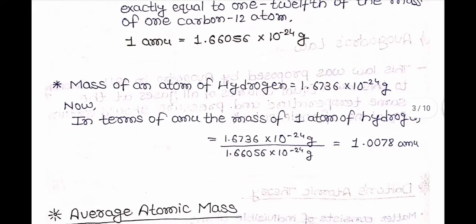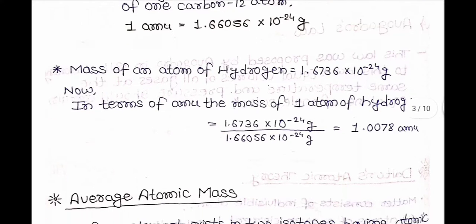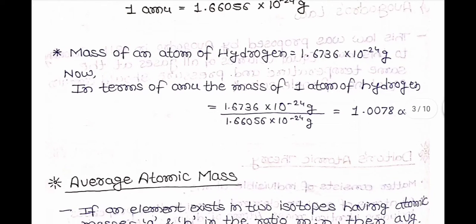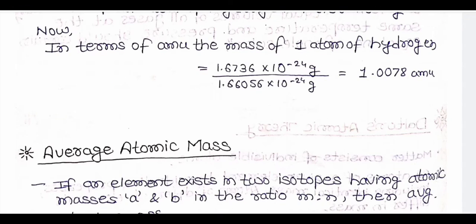Mass of one atom of hydrogen = 1.6736 × 10⁻²⁴ grams. Now in terms of amu, the mass of one atom of hydrogen = 1.6736 × 10⁻²⁴ ÷ 1.66056 × 10⁻²⁴ = 1.0078 amu.